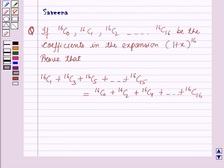Hello and welcome to the session. In this session we will discuss a question which says that if 16C0, 16C1, 16C2 and so on up to 16C16 are the coefficients in the expansion of (1 + x) raised to power 16, prove that 16C1 plus 16C3 plus 16C5 and so on up to 16C15 is equal to 16C0 plus 16C2 plus 16C4 plus so on up to 16C16.